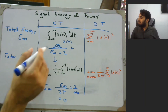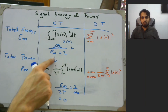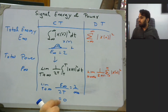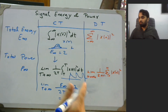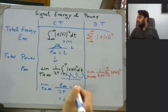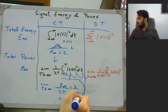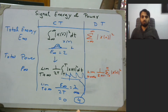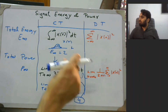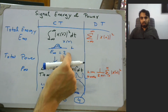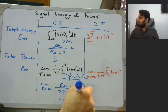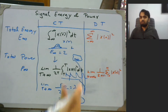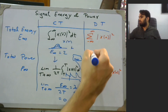What this means is: if we have a finite value for E_infinity, then P_infinity will be 0. On the other hand, if we have a periodic signal with finite power — say the power is 4 — then its energy would be infinite. These are the two key cases: if energy is finite, power is zero; and if power is finite, energy is infinite. This applies to both continuous-time and discrete-time signals.